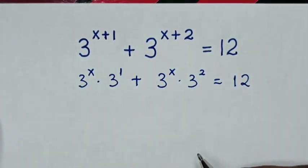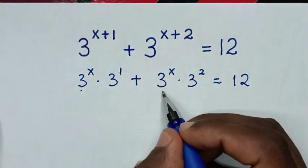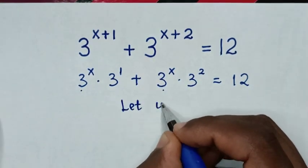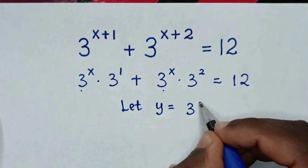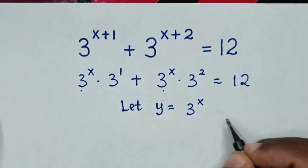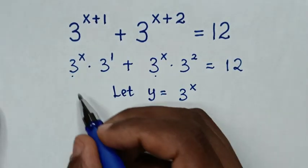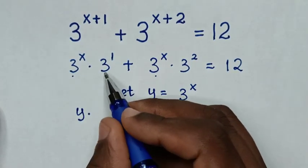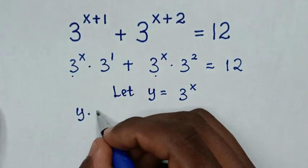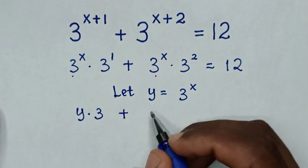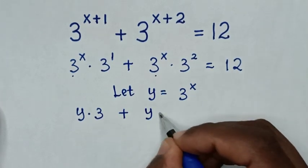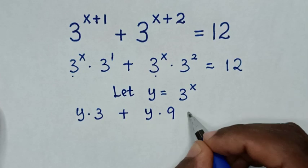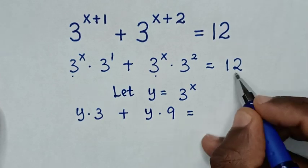In the next step, 3^x is common, so we let y equal to 3^x. Then it will be y times 3^1, which is 3, plus y times 3^2, which is 9, is equal to 12.